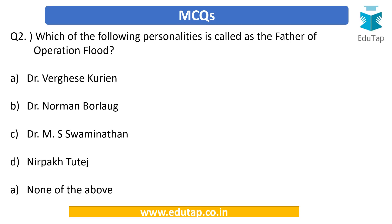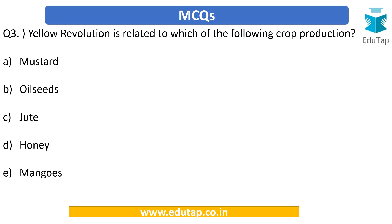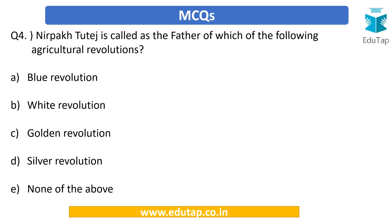Question number 2: Which of the following personalities is called the father of Operation Flood? This is a very important and typical exam question — go through the options. Question number 3: Yellow revolution is related to which of the following agricultural crops? Question number 4: Nirpakh to Tej is called the father of which of the following agricultural revolutions? Go through the options and try to solve them.